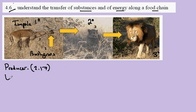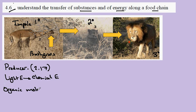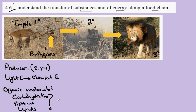The producer, as you'll recall from video 217, is converting light energy into chemical energy. This chemical energy takes the form of organic molecules, including carbohydrates, proteins, and lipids.